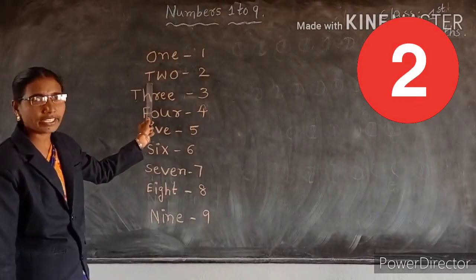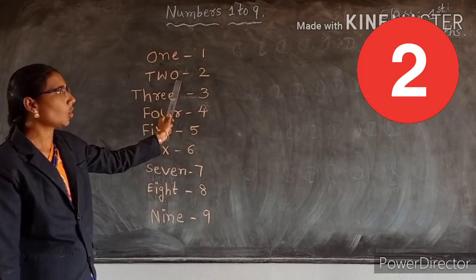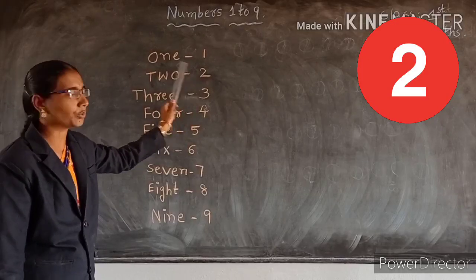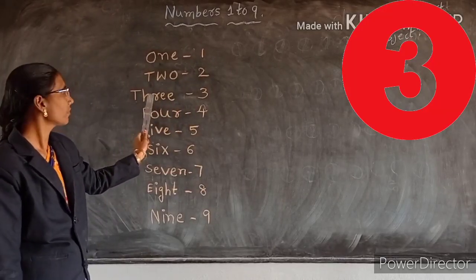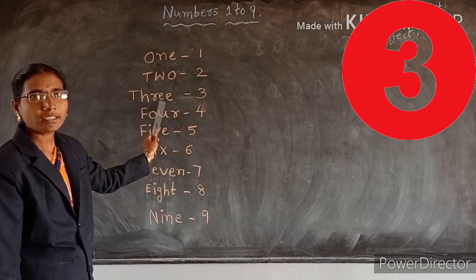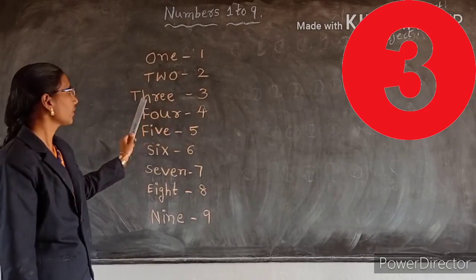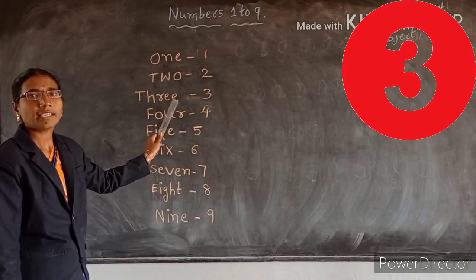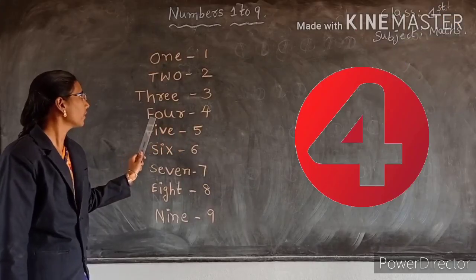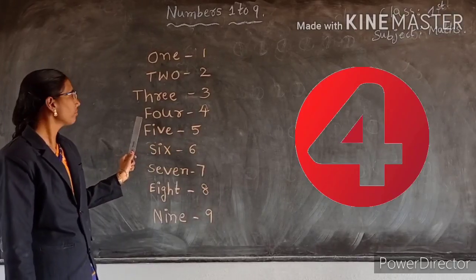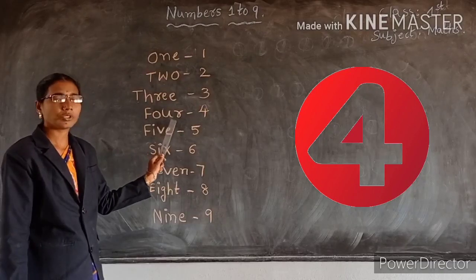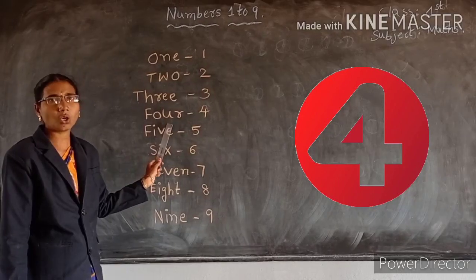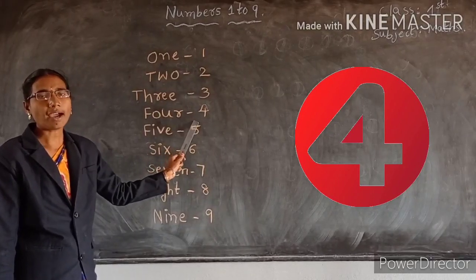Read, children. T, W, O. Two. T, W, O. Two. T, H, R, E, E. Three. T, H, R, E, E. Three. F, O, U, R. Four. F, O, U, R. Four.